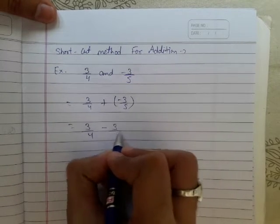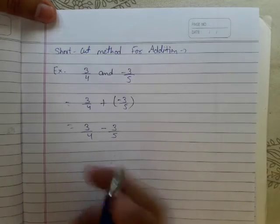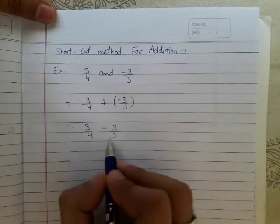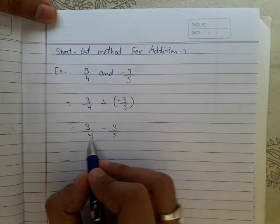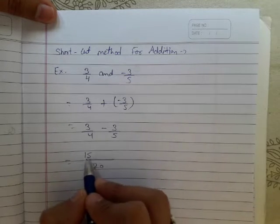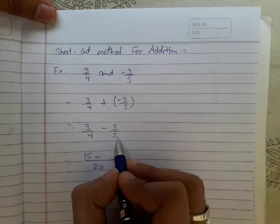Now take LCM. LCM of 4 and 5 is 20. Now 20 divided by 4 equals 5, 5 times 3 is 15. Minus: 20 divided by 5 equals 4, 4 times 3 is 12.